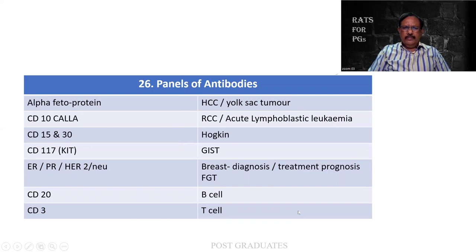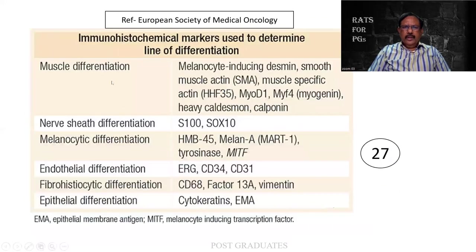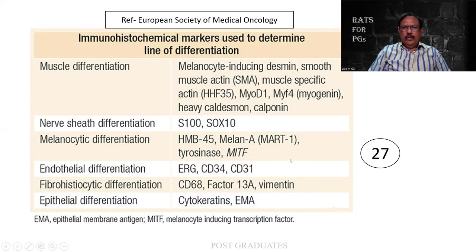The panel of antibodies continues - kindly go through it and you people can make use of it. This is a particular list taken from a source given here. For muscle differentiation, what all can be used? Nerve sheath differentiation, what do you use? Melanocyte, what do you use? Endothelial cell, fibro-histiocytic, and epithelial differentiation. This is a list derived from medical oncology - I would like you people to kindly make use of this also.